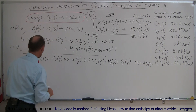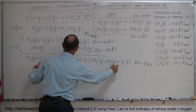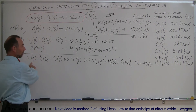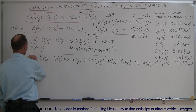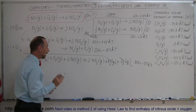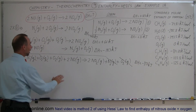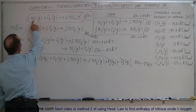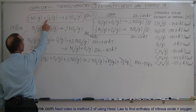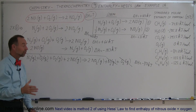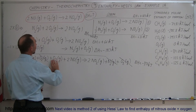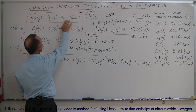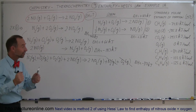Now notice: I have an oxygen on the left side and an oxygen on the right side, so I can cancel that out. I also have a nitrogen on the left side and a nitrogen on the right side, so that cancels out too. What I have left on the left side is 2 moles of nitrogen monoxide and 1 mole of oxygen gas. Looking at the target equation, that's exactly what I have there — 2 moles of nitrogen monoxide and 1 mole of oxygen gas. So the reactants are correct.